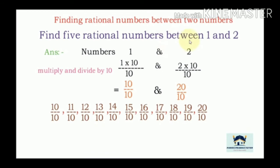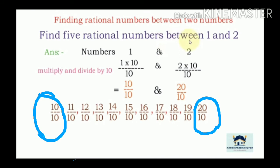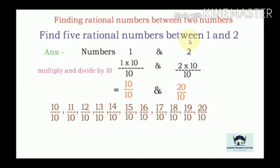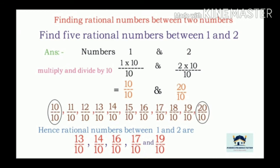Now coming to the next concept: finding rational numbers between two numbers. Find five rational numbers between 1 and 2. We multiply and divide both numbers by 10/10 to get at least eight rational numbers between them. So 1 becomes 10/10 and 2 becomes 20/10. Between 10/10 and 20/10 we get 11/10, 12/10, 13/10, 14/10, 15/10, 16/10, 17/10, 18/10, 19/10. We can write any five rational numbers; here we have taken 13/10, 14/10, 16/10, 17/10, and 19/10.